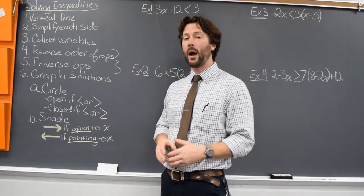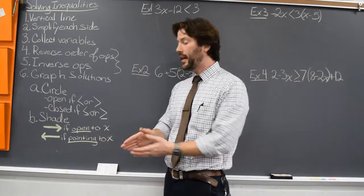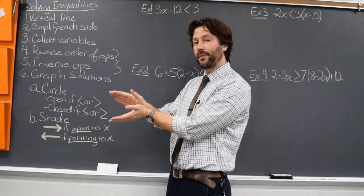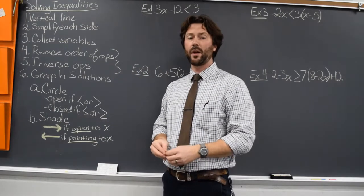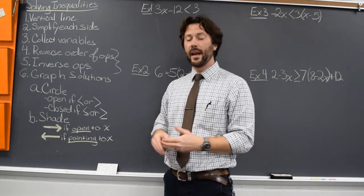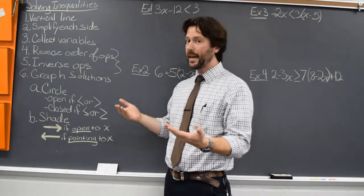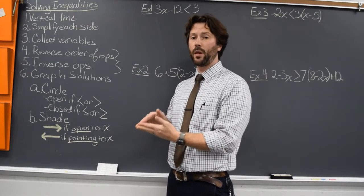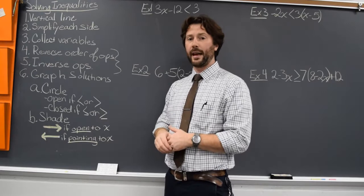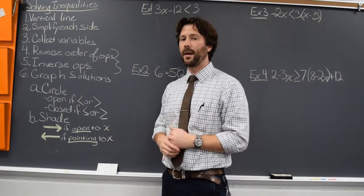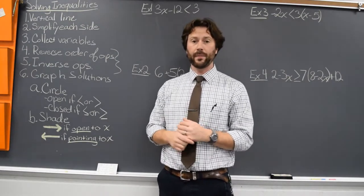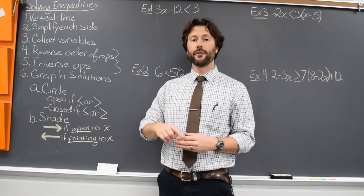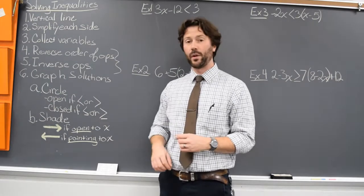We want to shade where our answers are. If the inequality opens to the variable — the alligator reads the bigger number — the variable is the bigger number, and we want to shade where the bigger numbers are, which are over on the right. If the inequality points to the variable, the variable is the smaller number, and we want to shade where the smaller numbers are, which are over on the left. Now, there is one detail to keep in mind: if we multiply or divide both sides of that inequality by a negative, we have to reverse the inequality. We'll see how that happens on one or two of these.